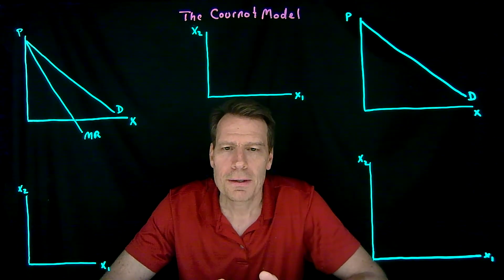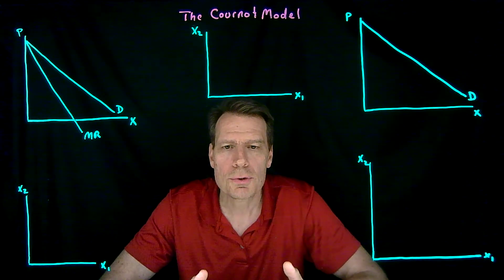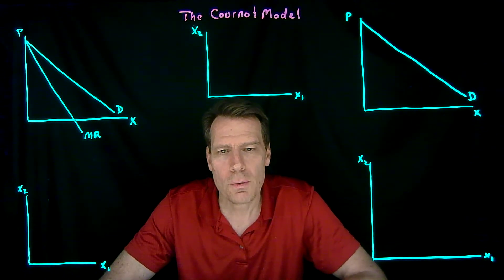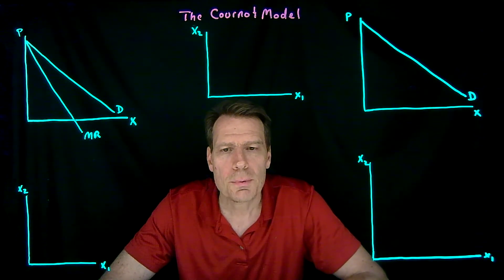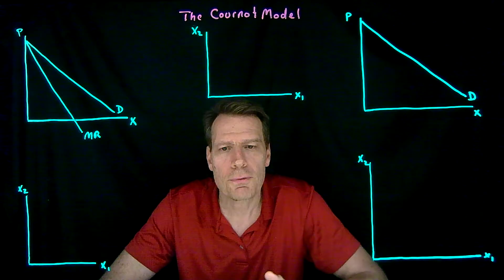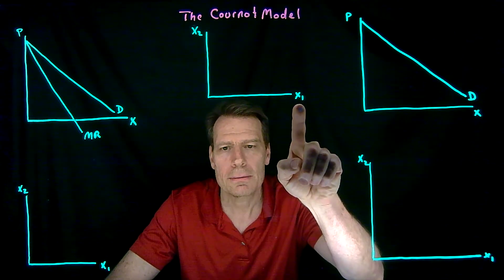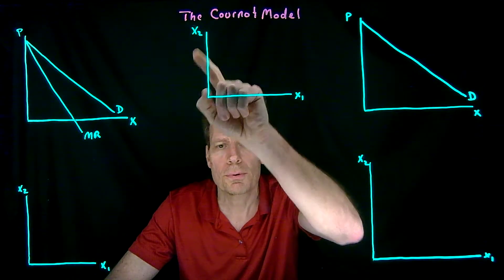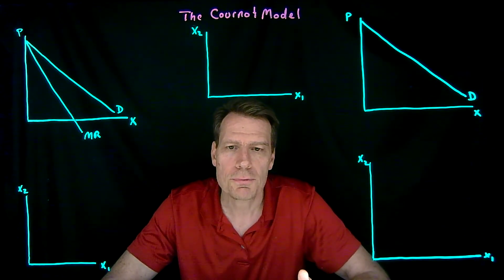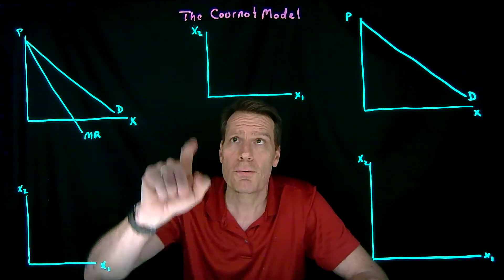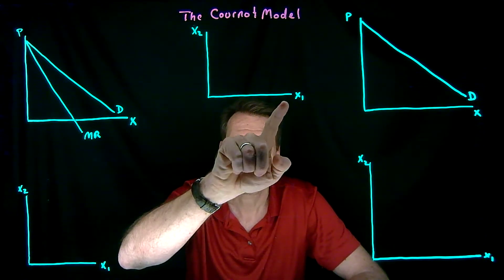We want to ask what the Nash equilibrium looks like if you have two firms competing by setting their quantity and then selling at whatever price they can get. We want a best response function for firm 2 that tells us, for any quantity x1, how much should firm 2 produce. Similarly, we want a best response function for firm 1 that says, for any quantity that firm 2 sets, what is firm 1's best response quantity.